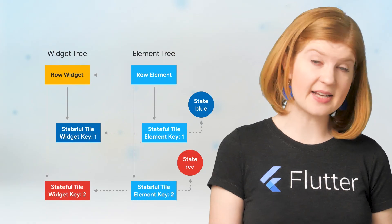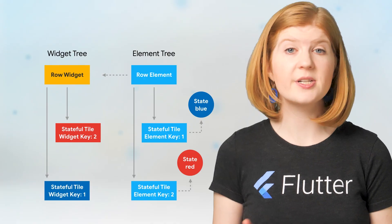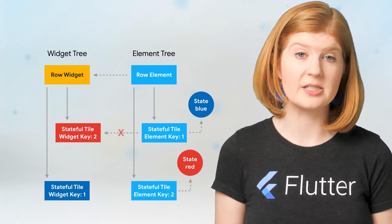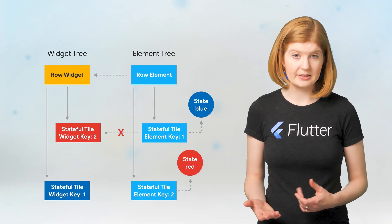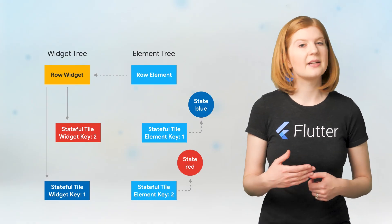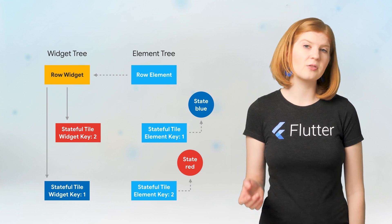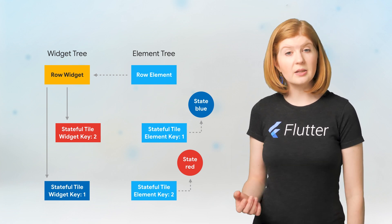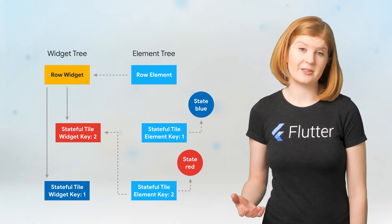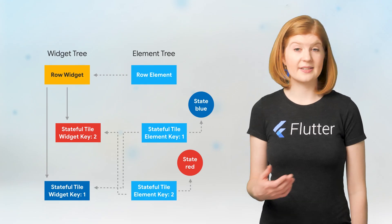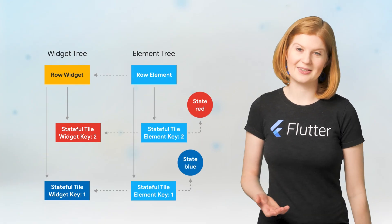In the second version with stateful tiles, I added key properties to the widgets. Now if we swap the widgets, the row widgets match like before, but the key of the tile element doesn't match the key of the corresponding tile widget. So Flutter deactivates those elements, removing references to the tile elements in the element tree. Then Flutter looks through the non-matched children for an element with the corresponding key, finds a match, and updates its reference to the corresponding widget. Flutter then does the same thing for the second child, and now displays what we expect — the widgets swap places and update their color.